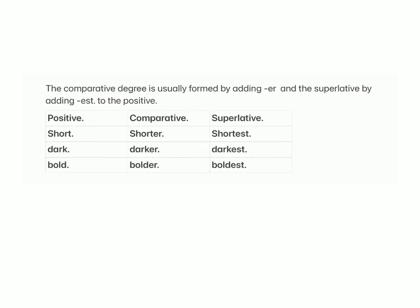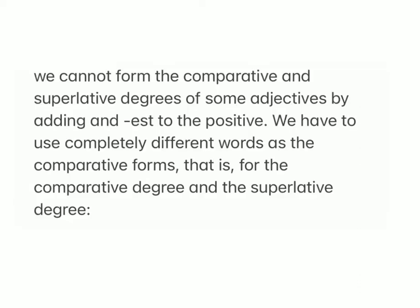The comparative degree is usually formed by adding -er and the superlative by adding -est to the positive. Examples: short, shorter, shortest; dark, darker, darkest; bold, bolder, boldest.